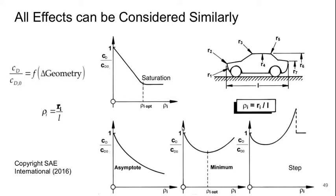Welcome to Part 6 of Lecture 5 of Bluff Body Aerodynamics. We've talked about all the individual effects, so let's now summarize what we've seen. All of these effects can be considered similarly and can be categorized into one of four types.